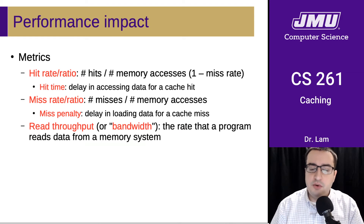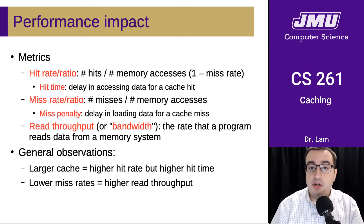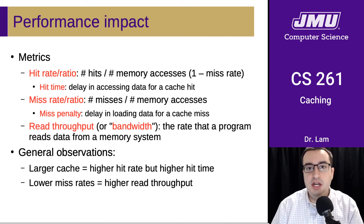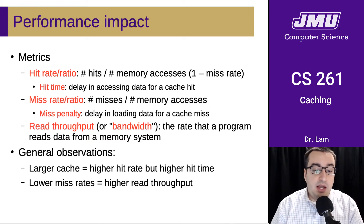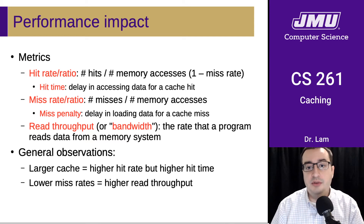The read throughput or bandwidth is the rate at which a program reads data from the memory system. Some general observations: a larger cache gives you a higher hit rate because you can fit more things in it, but also a higher hit time because it takes longer to search the cache. And if we have lower miss rates, we're going to have higher read throughput because we can use the higher levels of the memory hierarchy more effectively.